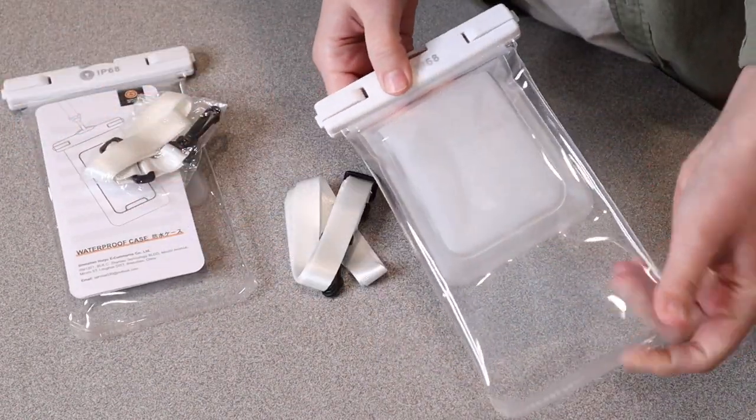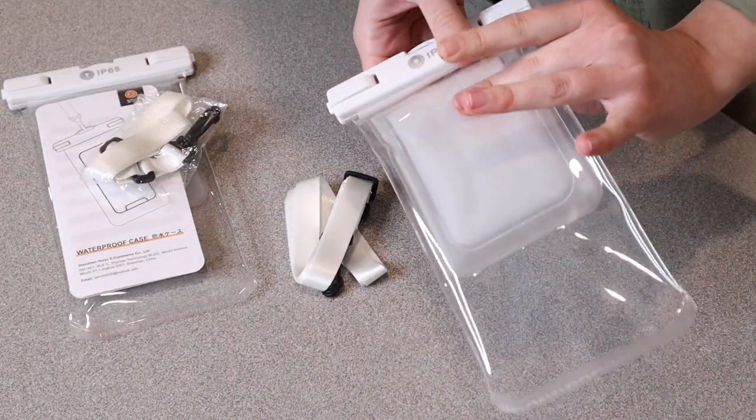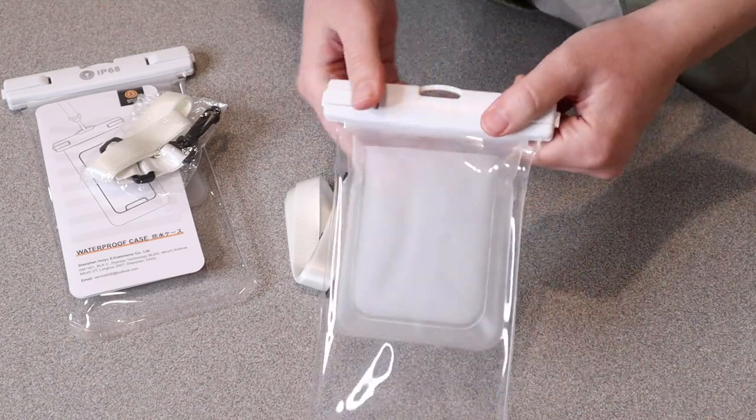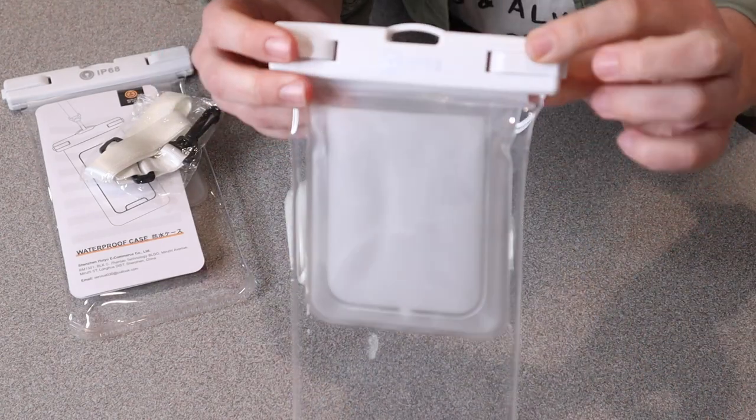So the way that these waterproof phone cases work is that they are completely sealed off so that you don't get any water inside this little pouch, and this is how they look when they're all sealed up.